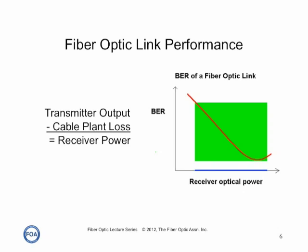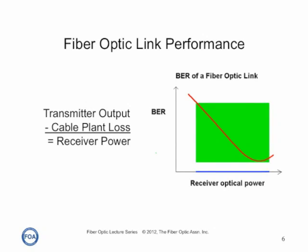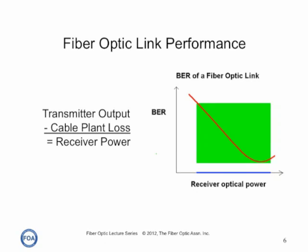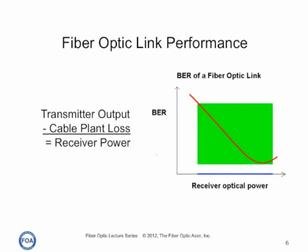The performance of a fiber optic link is defined by this graph. The vertical scale is bit error rate, which is the inverse of signal-to-noise. The horizontal scale is receiver optical power. The red line shows that as the receiver optical power gets higher, the bit error rate goes down — that is, the signal-to-noise improves and the quality of the signal improves. And that will continue until such a point that the receiver optical power gets so high that it starts saturating the receiver, and that red line starts turning up again very quickly to high bit error rate.